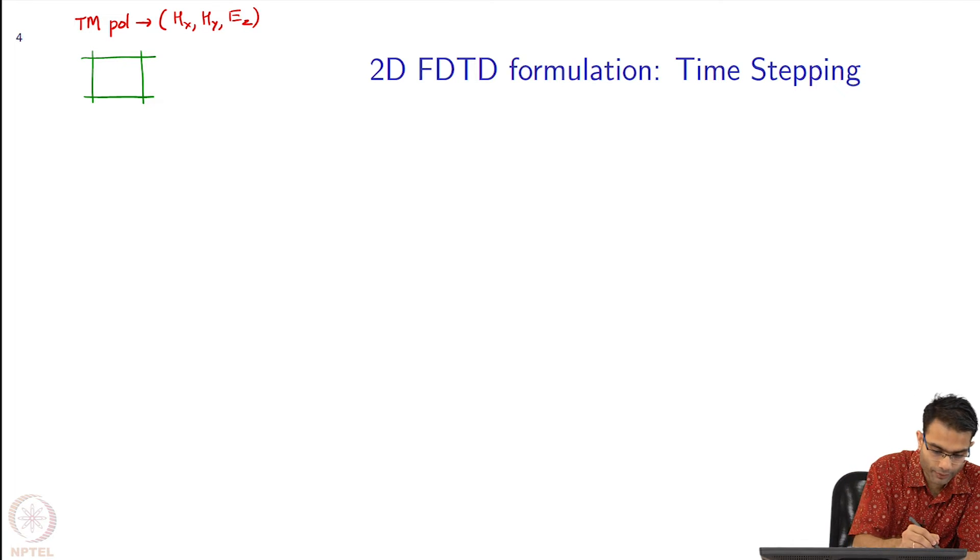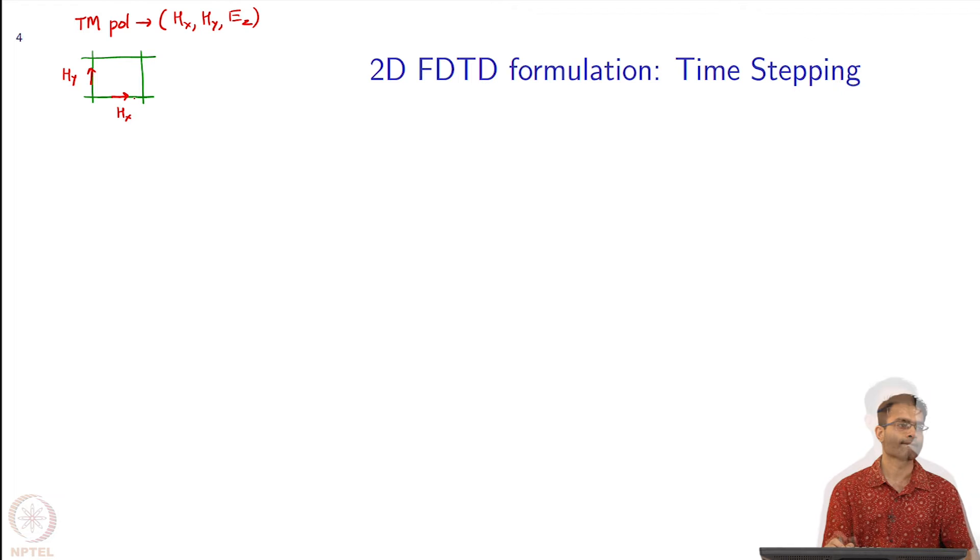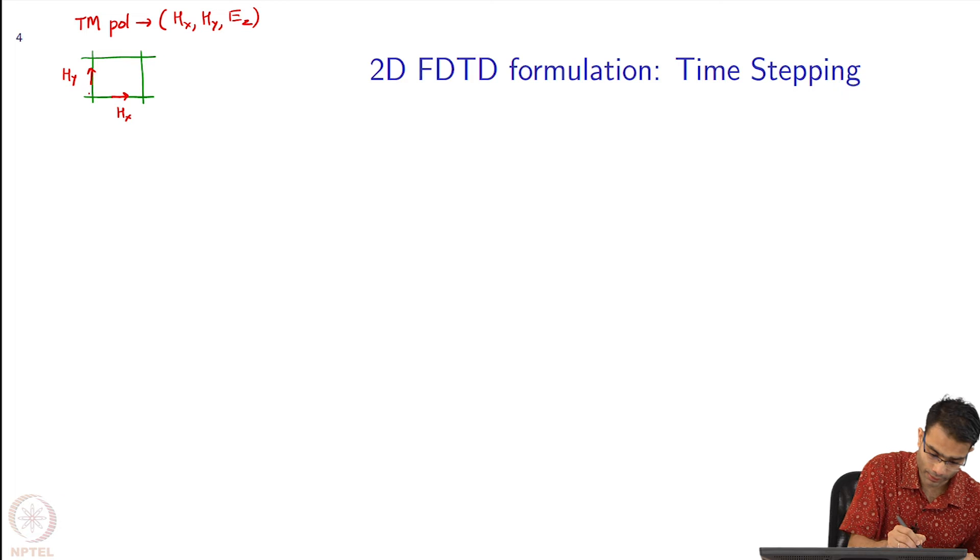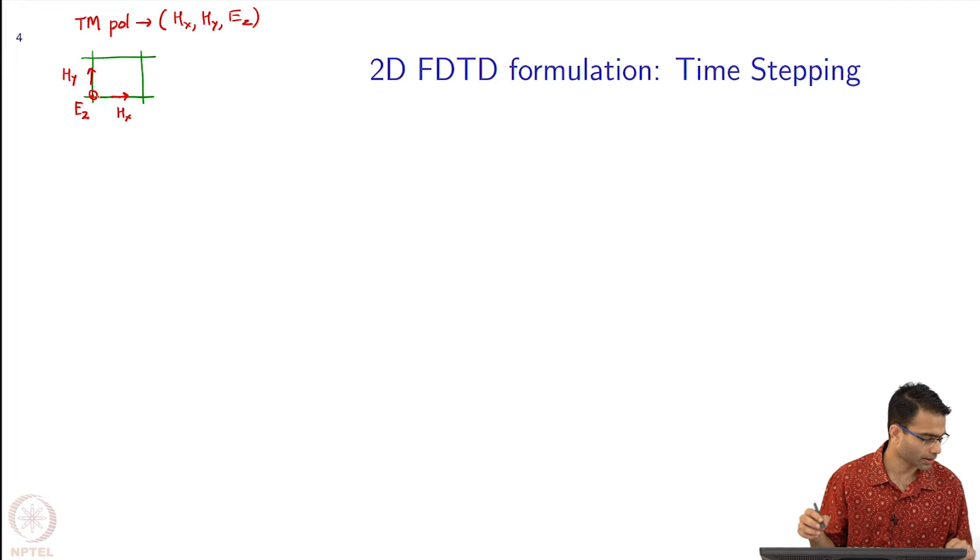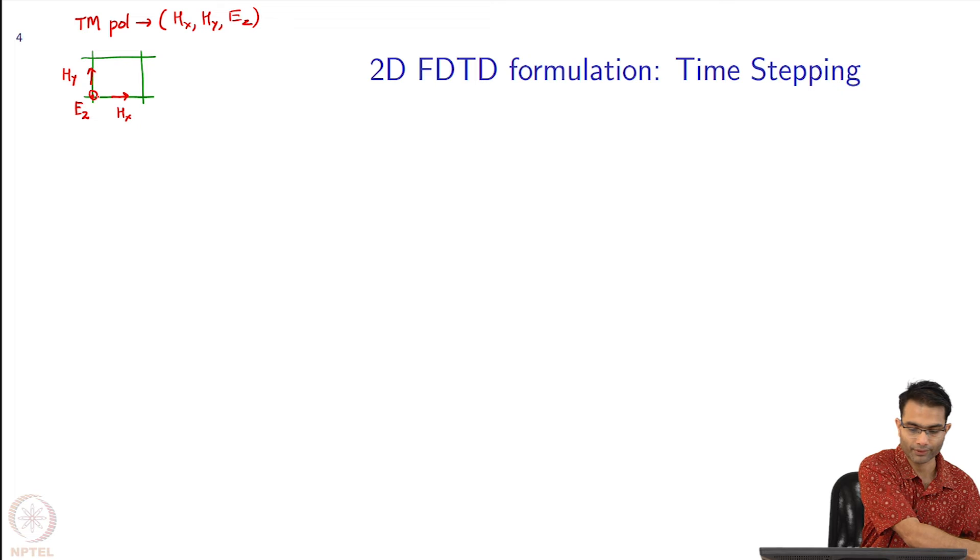The second consideration is we would like to have E at the grid lines where the grid lines are, so it is easier to enforce boundary conditions. With these considerations, the common choice for the TM stencil is: Hy here, Hx at the center, and Ez at the corner of the grid. It is still half a grid away from the other variables and helpful in satisfying boundary conditions. This is the TM stencil we will refer to when needed.